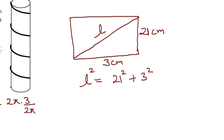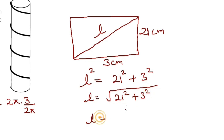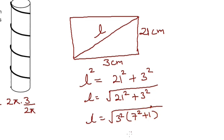The number of turns is not one. If we solve: l = √(21² + 3²), we can factor out 3² to get l = 3√(49 + 1) = 3√50. Since 50 is not a perfect square, l is not an integer. So n = 1 doesn't work.